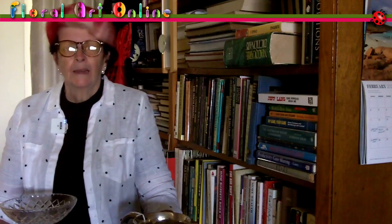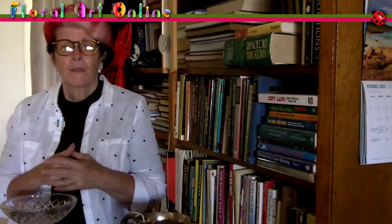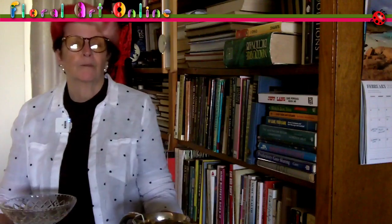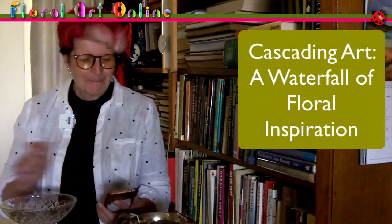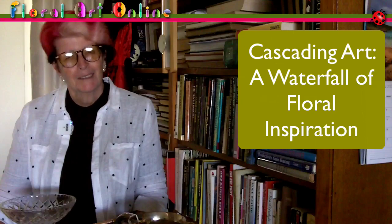It's a difficult design style to interpret, which is one of the reasons the judges chose it — we want to challenge members to think about how to portray a cascade or waterfall with plant material. For greenery you'll need things that are light and airy and pliable, such as ferns or grasses, things you can group together in mass or use separately to give flow and movement. I'm Kim Bailey and this is Floral Art Online — good luck with this month's challenge: Cascading Art, A Waterfall of Floral Inspiration.